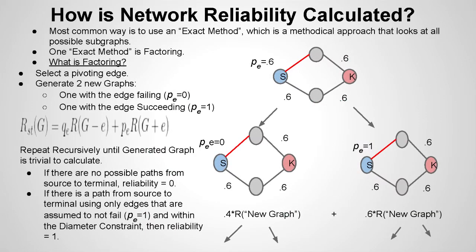Now, how is network reliability calculated? This slide's a little long, so if you have any questions, please stop. The most common way is to use an exact method, which is a methodical approach that looks at all possible sub-graphs. One of these exact methods is factoring. So what is factoring? If we look at this example over here, like Helen said before, the PE is going to be the probability of success, so we may have set it equal to 0.6 for all of the edges, so each edge's probability of success is equal to 0.6. Now, to calculate in factoring, first we will select a pivoting edge, which we will be choosing as the red line there. We will then create two new graphs, one with the edge failing, which would be setting it equal to 0, and one with it definitely succeeding, which would be setting it equal to 1.